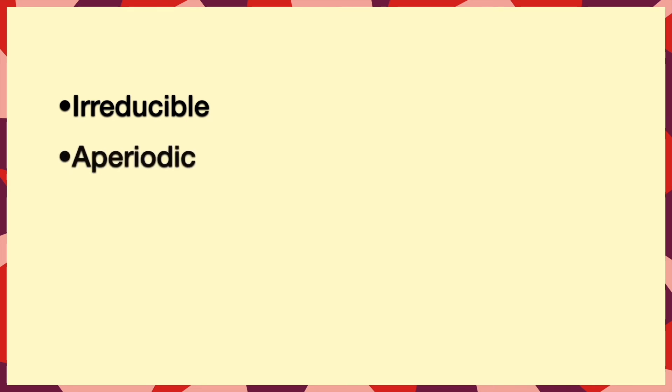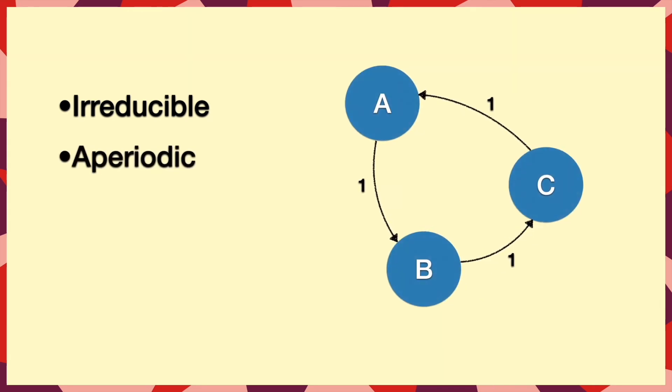Next, it needs to be aperiodic. This chain would fail, because if we started at A, we would keep going in circles, and we know exactly where we would be at each time step. So this chain is periodic with period 3.